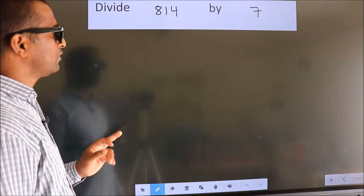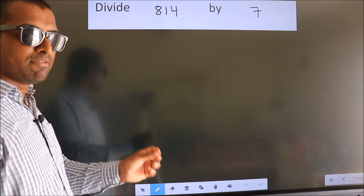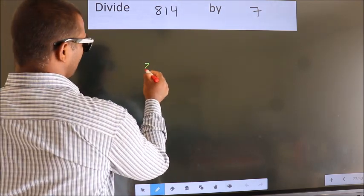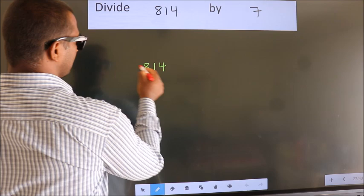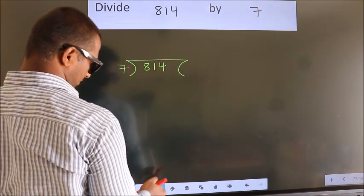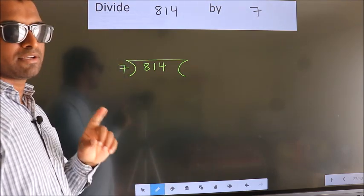Divide 814 by 7. To do this division, we should frame it in this way. 814 here, 7 here. This is your step 1.